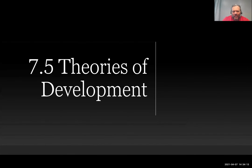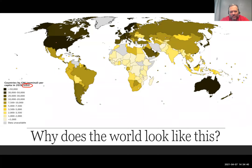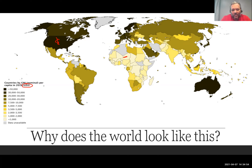All right, so 7.5 theories of development. Let's go ahead and get started. What this unit is all about — take a look at this picture. This is GNI per capita, gross national income per capita in 2018, measured in U.S. dollars. The question this section is trying to answer is: why does this map look like it does? Why is there so much wealth here and so little wealth there? There are vast resources around the world, yet vast differences in wealth and development. This is an attempt to explain some of those rationales.